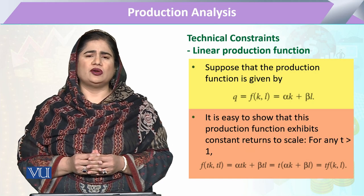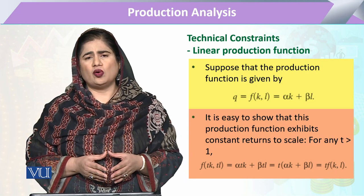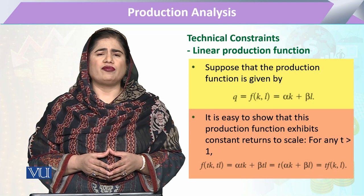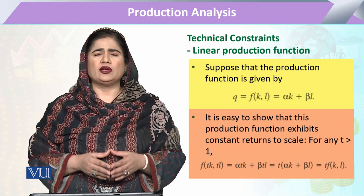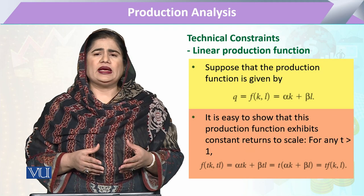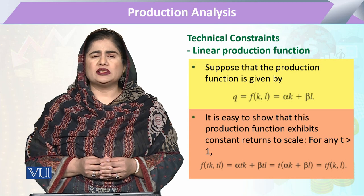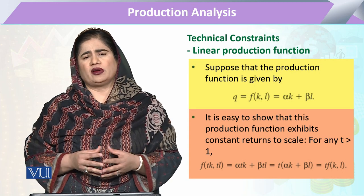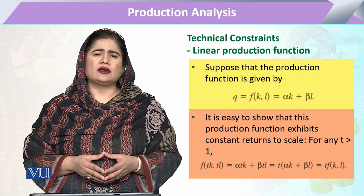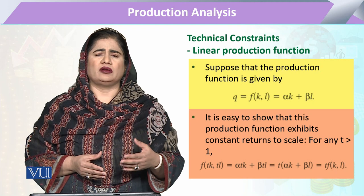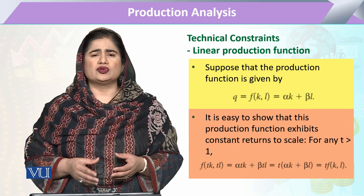In these types of production functions, the slope remains similar throughout — the straight line can be of various slopes, but whatever slope it has, it remains constant. When we explain in terms of returns to scale, multiplying the inputs by any factor T causes the output to increase by the same factor T, so this production function also exhibits constant returns to scale.